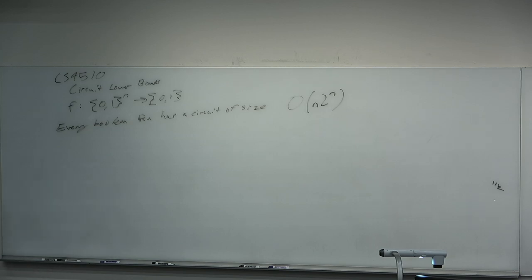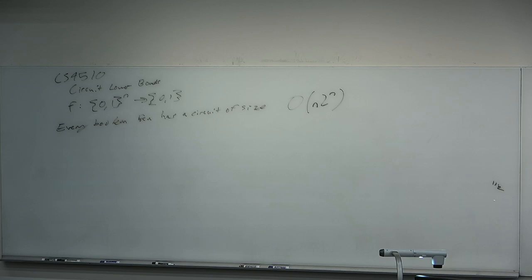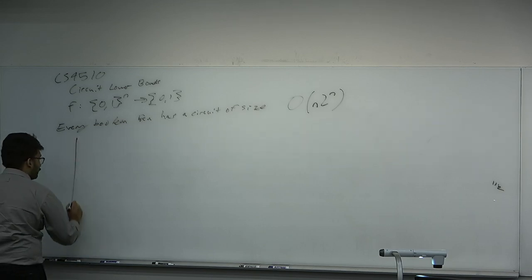Given an explicit Boolean function — think of it as the truth table — we're going to construct a circuit that computes that explicit Boolean function. So, non-uniform to non-uniform. Where do we start? We've got to start with the truth table. That's what a Boolean function looks like. So what we're going to do is take the truth table and write it down.